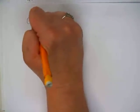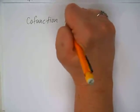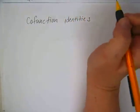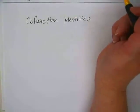Okay, last thing we need to learn today is called the co-function identities. You know how the sine of 30 and the cosine of 60 are the same?